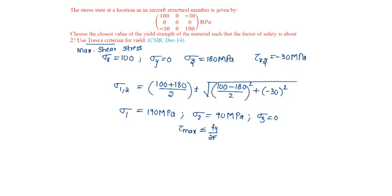Tau max is sigma 1 minus sigma 3 by 2. That is 190 minus 0 by 2 should be less than or equal to f5 by 2 into factor of safety is given as 2. So, the f5 will be equal to 380 megapascals.